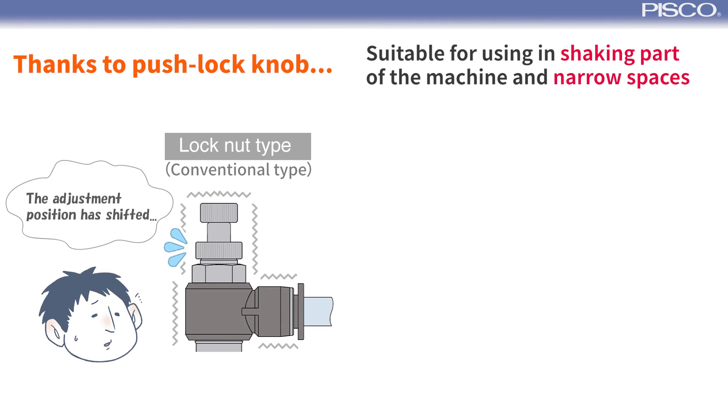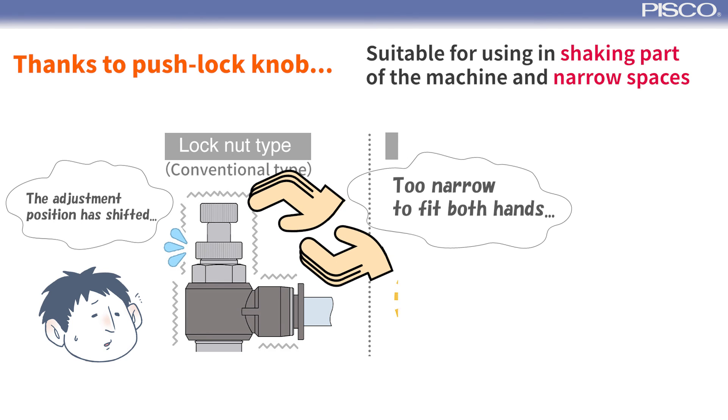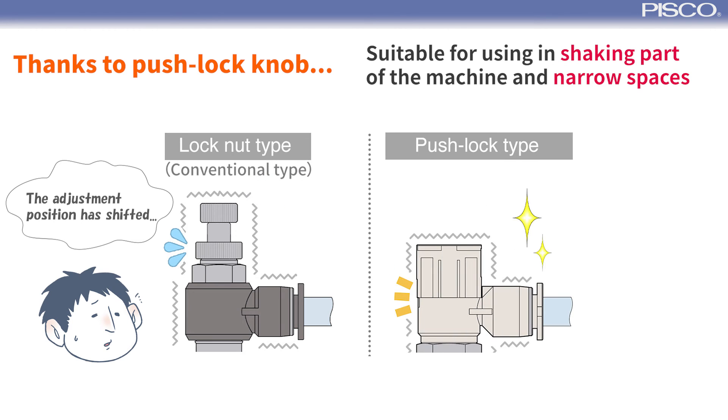The push lock type is ideal for locations where machine vibrations can loosen the lock nut that secures the needle, causing the adjustment position to shift, or where it's difficult to reach due to tight spaces, as it can be operated with one hand.